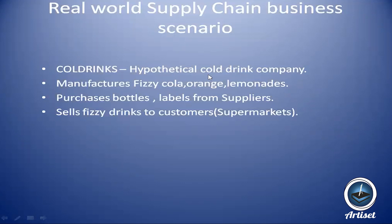Their core process is manufacturing the cold drinks. They'll have the formula or chemicals needed to manufacture. In addition to the drinks, they need containers or bottles, caps, and labels. For these things, the company will approach vendors. So they buy bottles, labels, and all those supplies from suppliers or vendors. Whatever they manufacture, they sell to customers — in this example, to supermarkets.